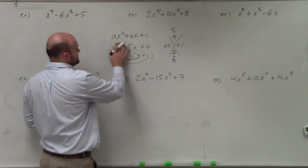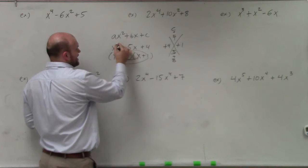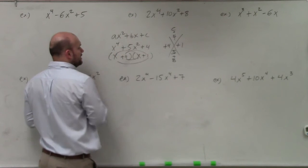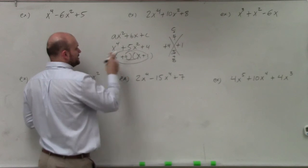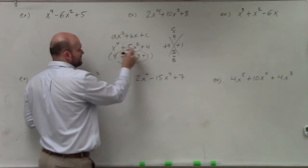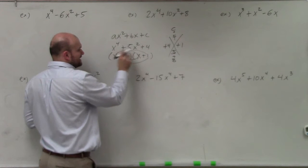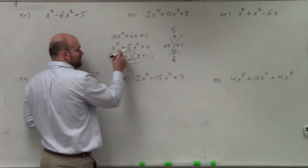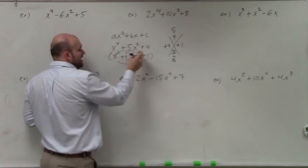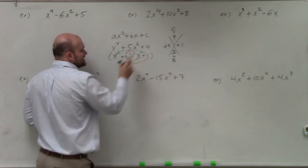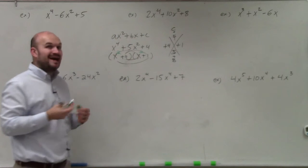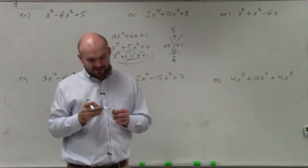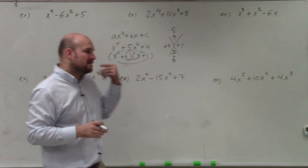If I change this problem to x⁴, basically my first product — x times x — needs to be x⁴, not x² anymore. So if I rewrite these as x², then x² times x² is x⁴. That's a really important thing to recognize.